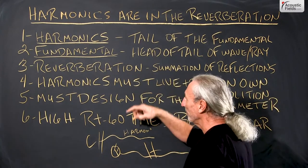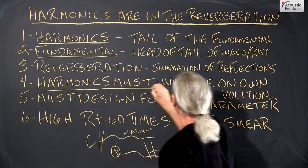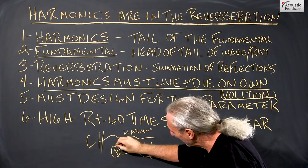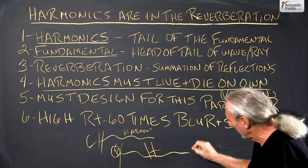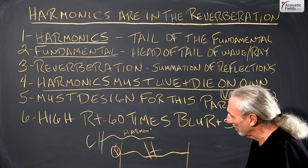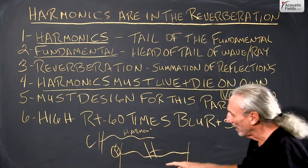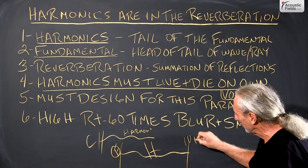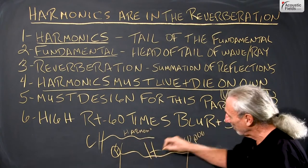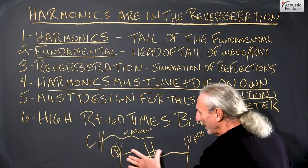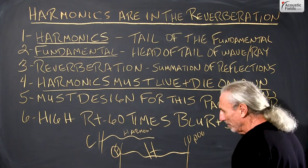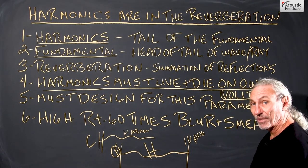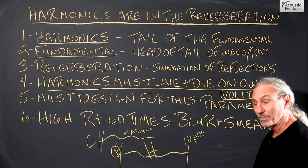We know reverberation, we've defined that. So the harmonics must live and die on their own volition. We can't have anything in the way of the tail, so to speak — we have to let the tail run its full course. So if it's middle C, we've got to let it run all the way out maybe to 10,000 cycles. Anybody can do a fundamental, but where's the tail, where's the harmonic? Without it, it's dull, it's a thump — more noise than music.